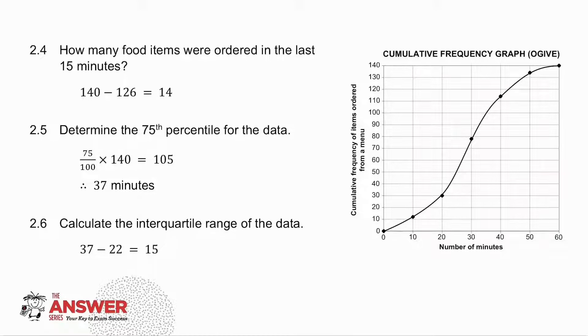2.5 asks you to determine the 75th percentile. So I take 75% of 140 numbers, and I get 105. So I go across from 105 and go down to get the time, and I get 37 minutes.